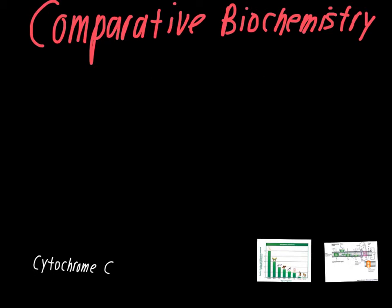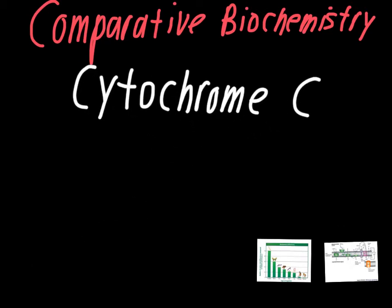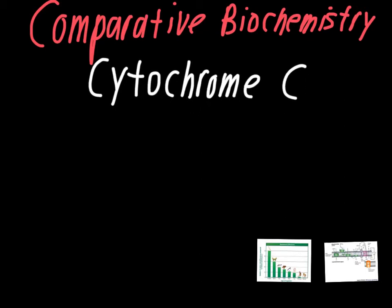In order to talk about comparative biochemistry, we first have to discuss something called cytochrome C. Cytochrome C is an enzyme that's critical during the process of respiration. We're going to look at some slight differences in the amino acid profile of the genes that code for cytochrome C in organisms. Organisms that are closely related evolutionarily will have more similarities in their amino acid profile for the cytochrome C part of the electron transport chain.